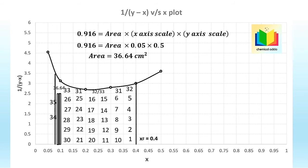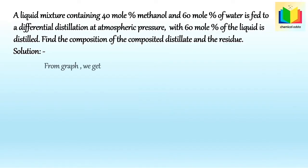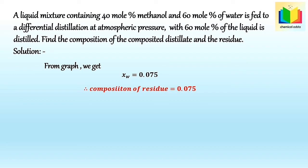By counting the area of 36.64 boxes on the graph, we get Xw = 0.075. Hence, from the graph, the residue composition is Xw = 0.075.